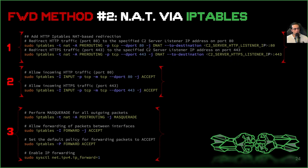Here we have three general blocks to configure a NAT C2 redirector. In the first block, we have the port 80 and 443 destination NAT operation. In the second block, we're allowing connections to ports 80 and 443. In the third block, we're enabling IP forwarding at the kernel level while also applying the masquerade operation, which modifies the source IP address of packets being sent on the outgoing interface to the C2 server. In summary, these commands configure the Linux system to act as a packet-forwarding router that not only forwards packets between its interfaces but also makes outgoing traffic appear as if it originated from the C2 redirector's IP address — this is what allows the C2 server to respond to the C2 redirector without getting in direct contact with the target.